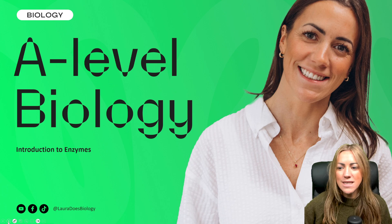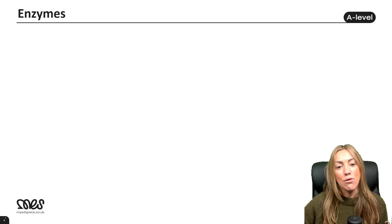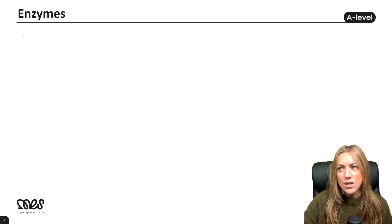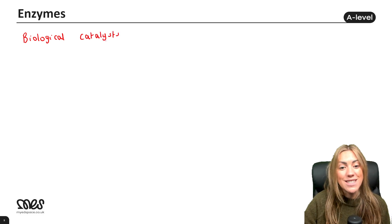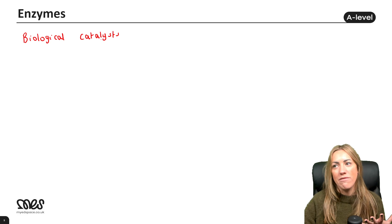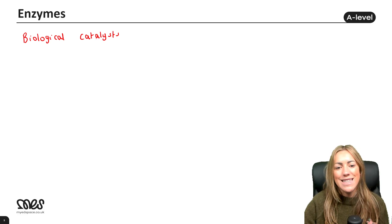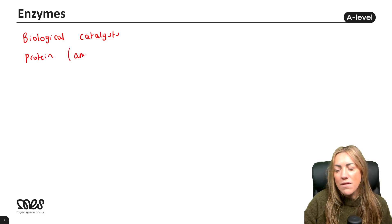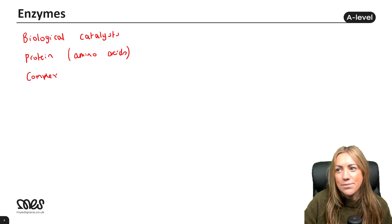Let's put together a summary of what we know about enzymes — what they are and what they do. Enzymes are biological catalysts, which means they speed up chemical reactions inside living things. They are proteins, which means they're made up of amino acids and have a complex 3D tertiary structure.